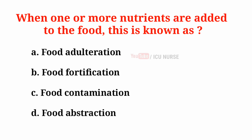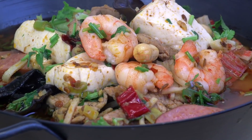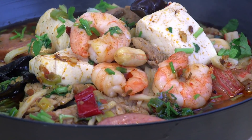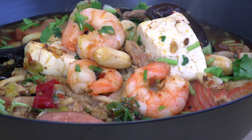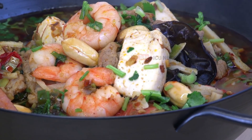When one or more nutrients are added to the food, this is known as: A. Food adulteration, B. Food fortification, C. Food contamination, D. Food abstraction. According to WHO, the process whereby nutrients are added to foods in relatively small quantities to maintain or improve the quality of diet of a group, a community, or a population is called food fortification.